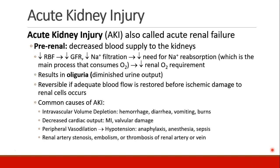Acute kidney injury is reversible if you can restore adequate blood flow before ischemic damage occurs. The most common causes of acute kidney injury would be intravascular volume depletion due to hemorrhage, diarrhea, vomiting, or burns. Decreased cardiac output, as you might see with a myocardial infarction or valvular damage. Significant peripheral vasodilation — you might see that in hypotension due to anaphylaxis, anesthesia, or sepsis.